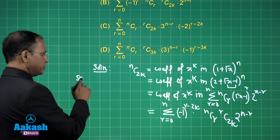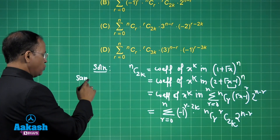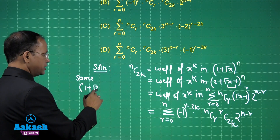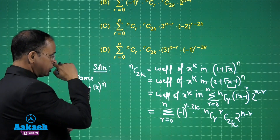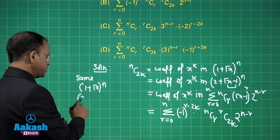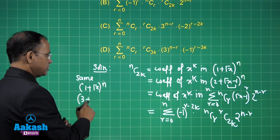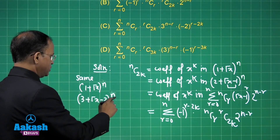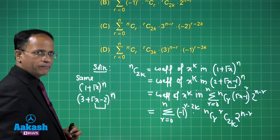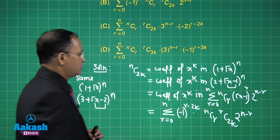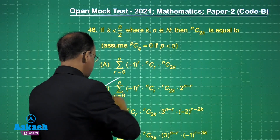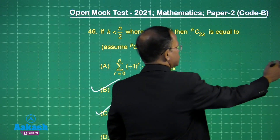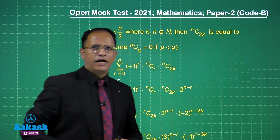Similarly, we can also use (1 + √x) raised to the power n, rewriting it as (3 + √x − 2) raised to the power n to check the other options. Looking at the answer choices, options B and C are the correct ones.